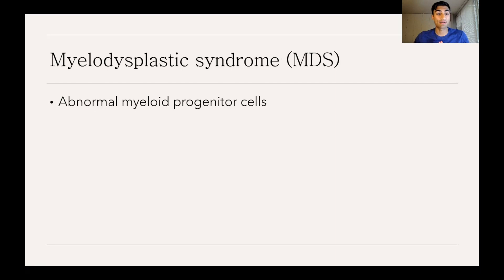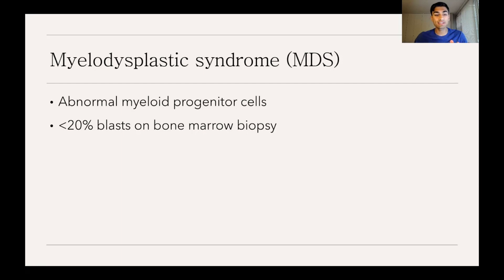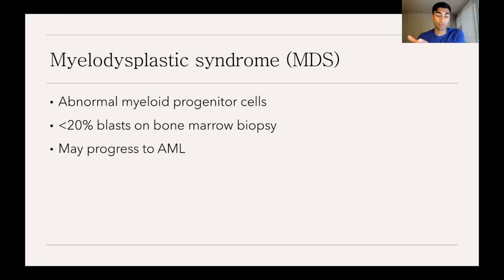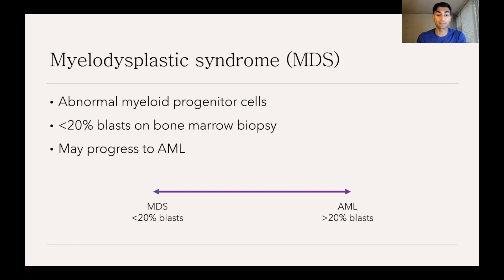Another condition to know is myelodysplastic syndrome, abbreviated MDS. This is similar to AML in that you have abnormal myeloid progenitor cells, but the difference is that you have less than 20% blasts on bone marrow biopsy — whereas AML has more than 20%. MDS is its own condition but may progress to AML over time; you can think of MDS and AML on a spectrum defined by that 20% blast threshold.